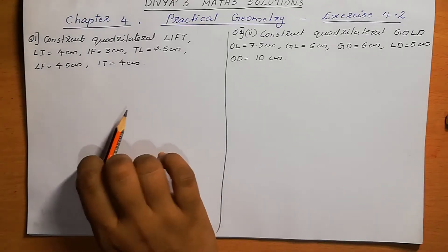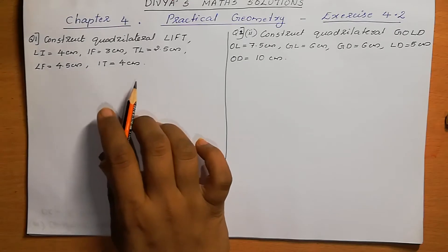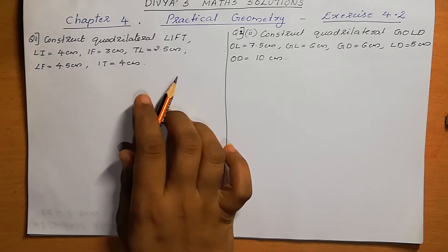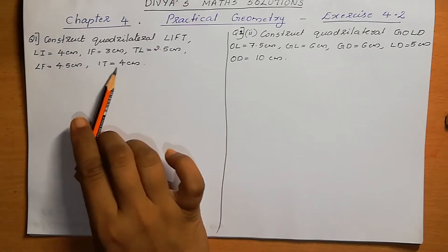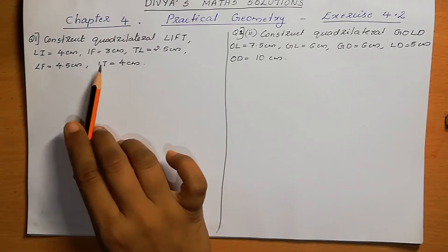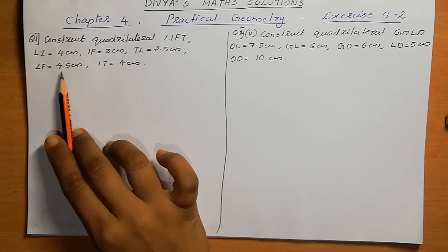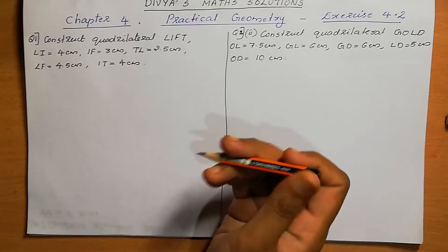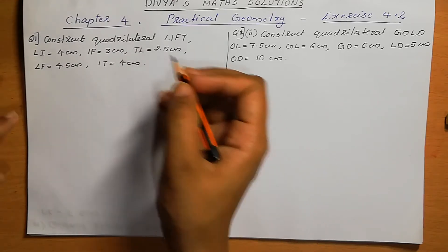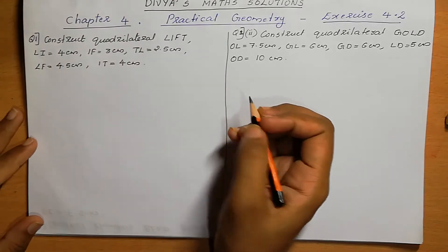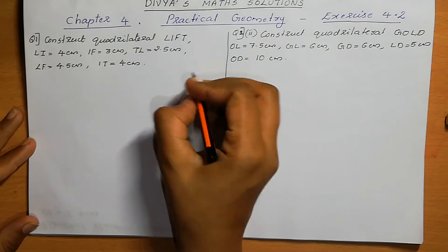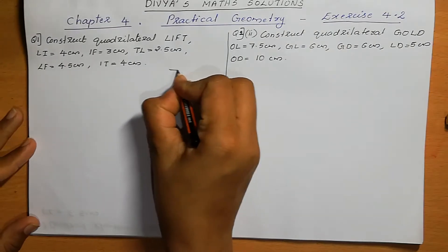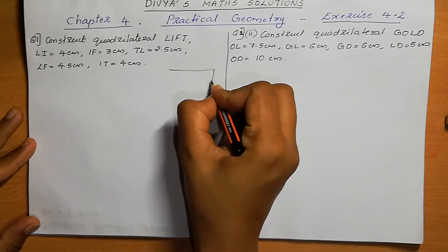Question number 1: Construct quadrilateral LIFT. LI = 4, IF = 3, TL, LF, and IT are given. We need to construct a quadrilateral. Quadrilateral means a four-sided figure. So first we can draw a rough figure.